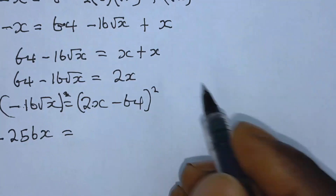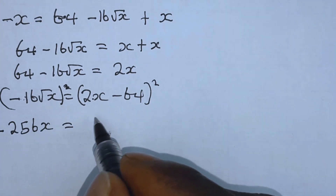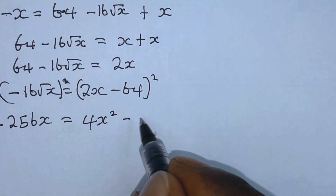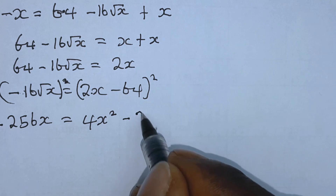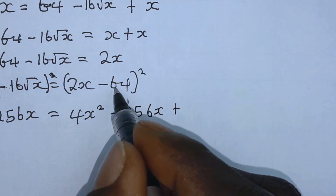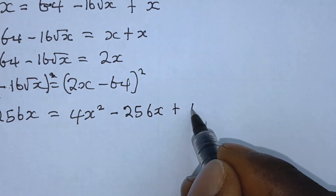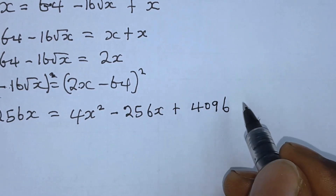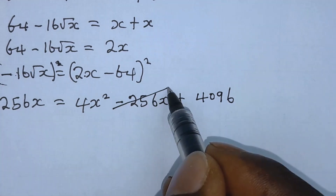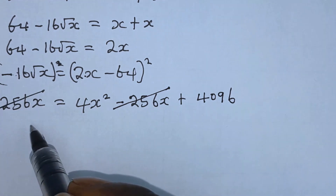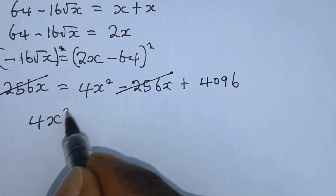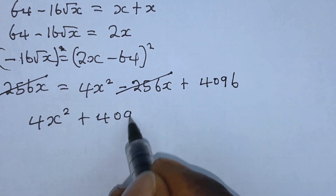We expand to get 4x squared minus 256x plus 4096. From here the minus 256x gets cancelled with minus 256x, so we are left with 4x squared plus 4096.